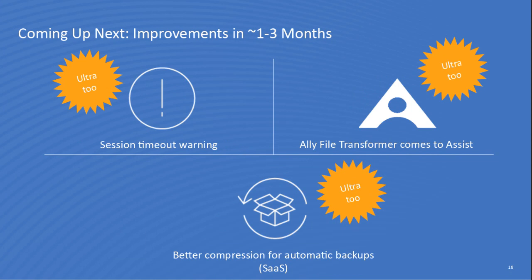Continuing in the one-to-three-month area: we're improving the session timeout end-user experience so users know clearly when they've been logged out — also available for Ultra. For Blackboard Assist, we're bringing in the Ally file transformer capability, allowing students doing research or group projects to improve accessibility scores and download alternative formats. Finally, we're improving the compression workflows and storage management for SaaS automatic backups, since some environments have taken more space than expected.